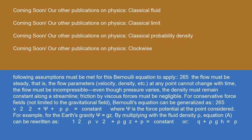The following assumptions must be met for Bernoulli's equation to apply: the flow must be steady — that is, the flow parameters such as velocity and density at any point cannot change with time; the flow must be incompressible — even though pressure varies, the density must remain constant along a streamline; and friction by viscous forces must be negligible.